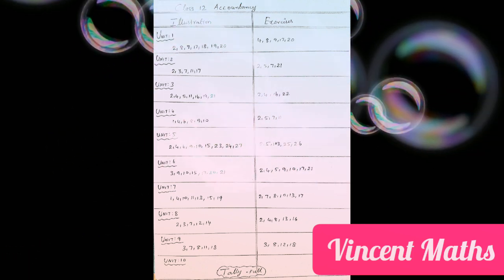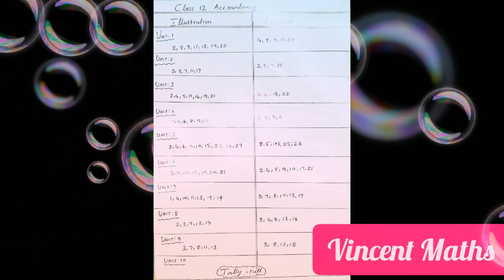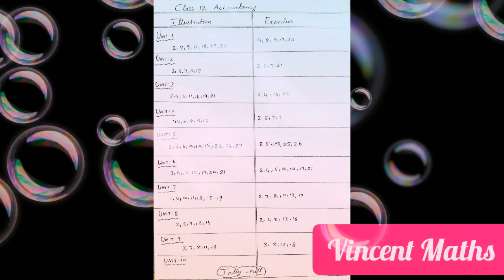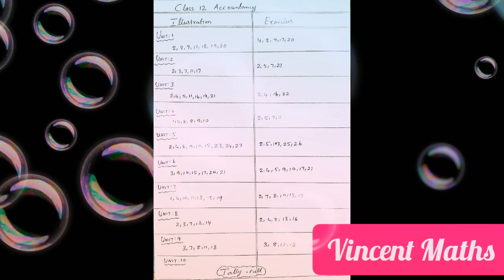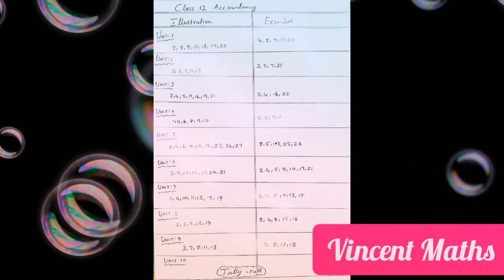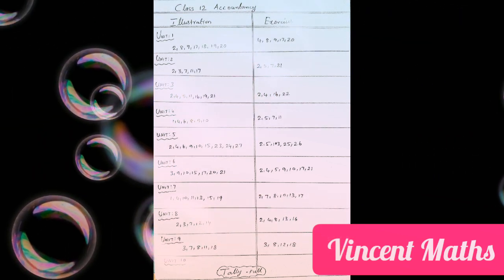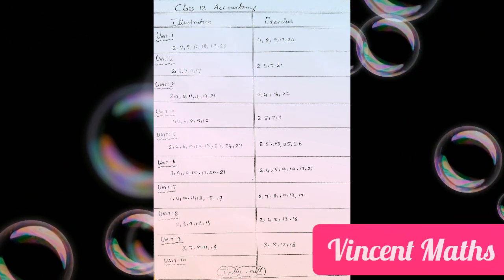The important sums are: 2nd, 4th, 6th, 9th, 10th, 15th, 23rd, 24th, and 27th sum. This is the most important illustration.